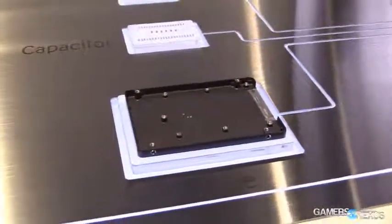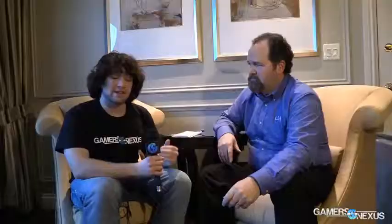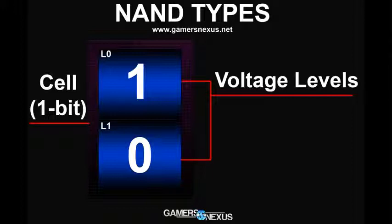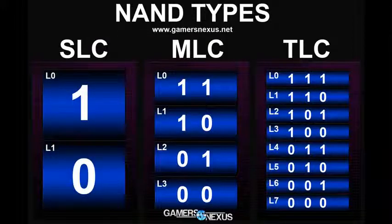Starting with the NAND types: MLC as an acronym means multi-level cell, TLC is triple-level cell. We should also mention SLC — single-level cell — which today you really only see in high-end enterprise. What these terms are talking about is the actual voltage levels kept within a cell. Single-level cell means two voltage levels effectively — on and off — storing one bit. When you go to MLC, you actually store four levels, meaning there are four voltage levels being stored in an individual cell versus just two.